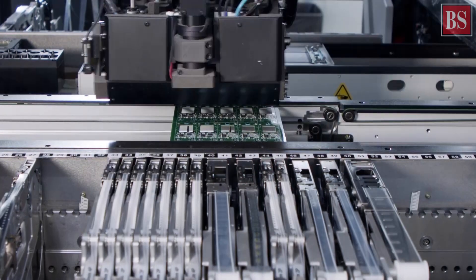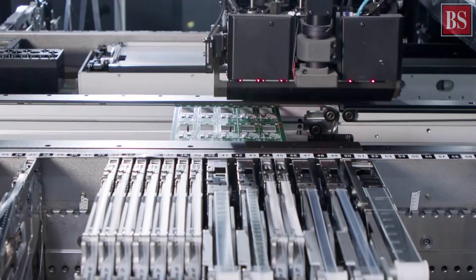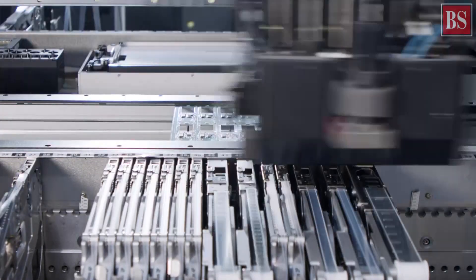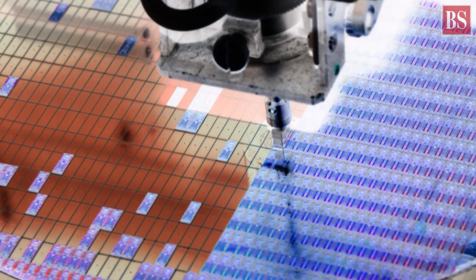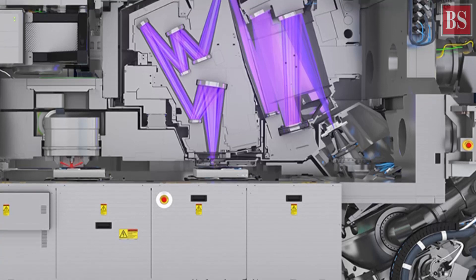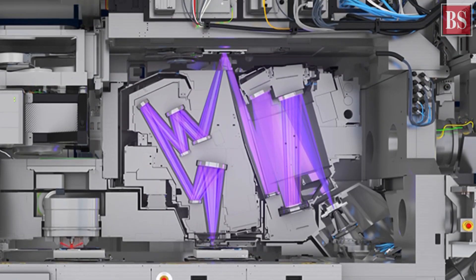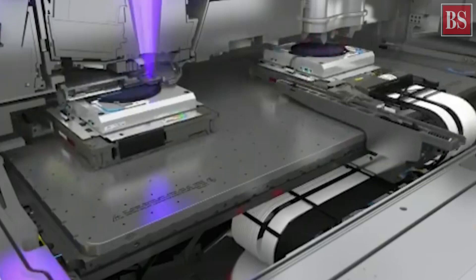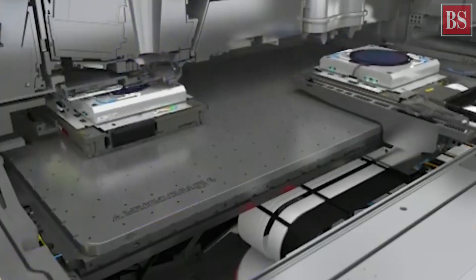In 1975, he revised his prediction to every two years. His prediction has proved to be true and today's microchips contain tens of billions of transistors. ASML's EUV machine pushes Moore's law forward and chip makers cannot produce leading-edge chips without it.